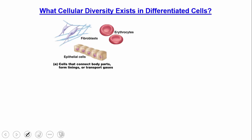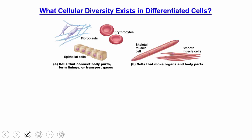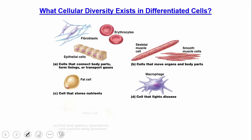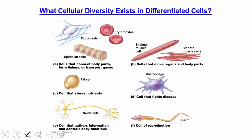Once cells are fully differentiated, what categories exist? We have cells that line and connect body parts — epithelial cells, fibroblasts, erythrocytes; cells that move organs and body parts — muscle cells; cells that store nutrients — fat cells; cells that fight disease — macrophages; cells of the nervous system; and cells of reproduction — sperm and eggs.